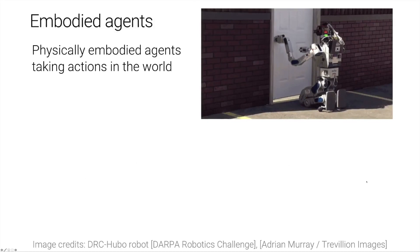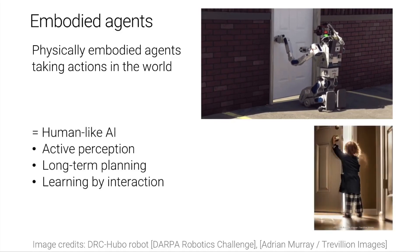When we talk about embodiment, we are interested in embodied agents that can physically exist in the real world and take actions in the world, such as the robot you see here opening a door in the Dharma challenge. These kinds of agents need to exhibit some form of human-like AI — intelligence that involves active perception of the world, long-term planning to decompose tasks into sub-tasks and carry them out in sequence, and the ability to learn by interaction with the environment.